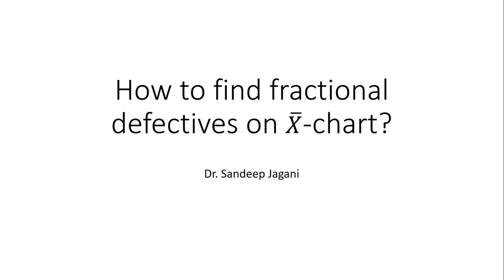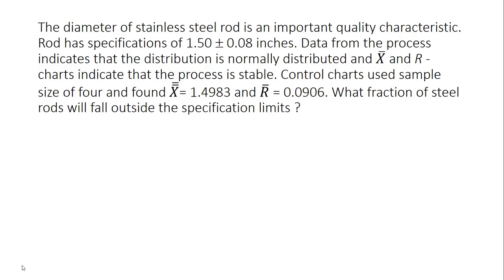That is, if an X-bar chart is given to you and the specification limits are given to you, what is the proportion of the units that will fall outside the upper specification limit and below the lower specification limit? We will solve this by directly using an example. Let us consider the diameter of a stainless steel rod is an important quality characteristic. Rod has specifications of 1.5 plus or minus 0.08 inches. Data from the process indicates that the distribution is normally distributed and X-bar and R-charts indicate that the process is stable. Control charts use sample size of four and found X-double-bar equal to 1.4983 and R-bar equal to 0.0906. What fraction of steel rods will fall outside the specification limits?